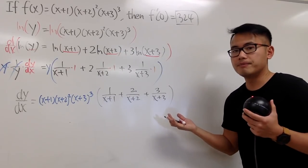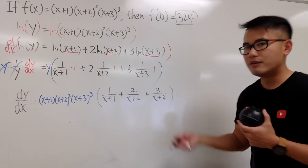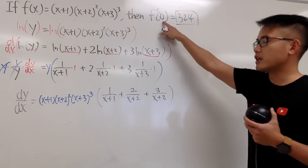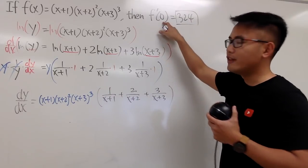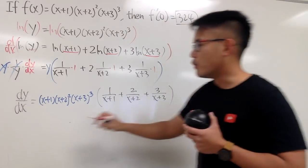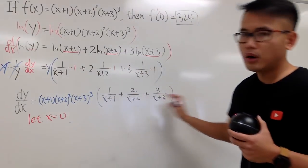That's pretty much it. And of course, you can multiply this, or simplify this, whatever, but all in all, you just care about the value of this expression when x is equal to 0. Therefore, all we have to do is just to plug in 0 into all the x's.